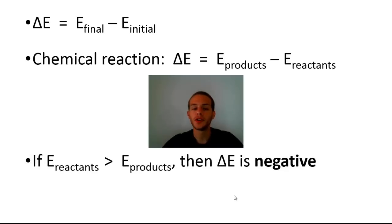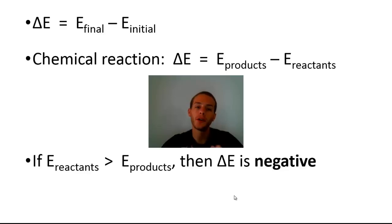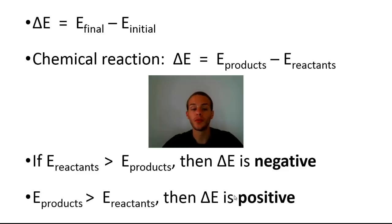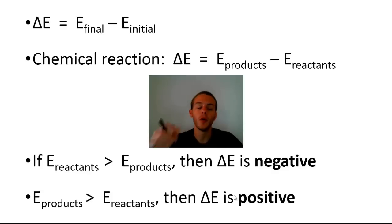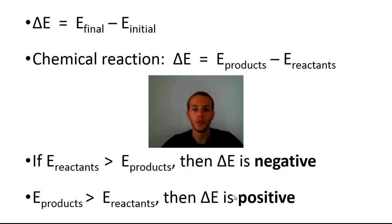Whether your chemical reaction absorbs or releases energy depends on the relative internal energies of products and reactants. If the internal energy of the reactants is greater than that of the products, you get a negative ΔE — overall energy is released into the surroundings. If the internal energy of the products is greater than that of the reactants, you get a positive ΔE, meaning overall energy is being absorbed into the system.